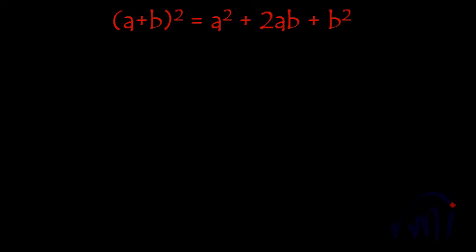Hi, so the identity we are going to learn today is: a plus b whole square is equal to a square plus 2ab plus b square. We are going to learn it using geometry.